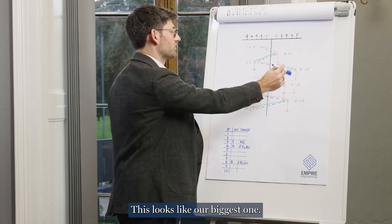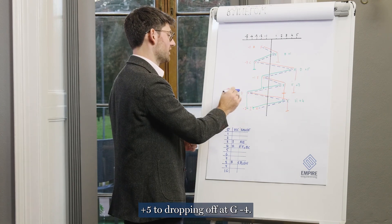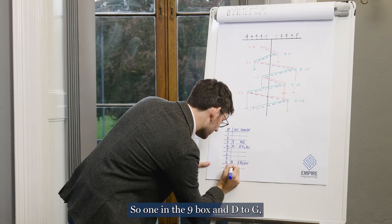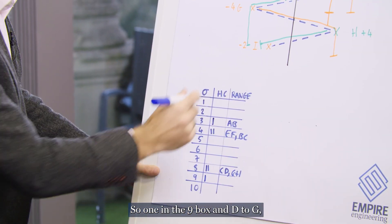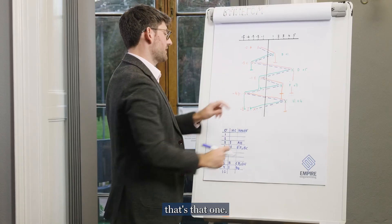Next one, this looks like our biggest one. This goes all the way from plus five to dropping off at G minus four. So that's a range of nine. So one in the nine box and D to G.